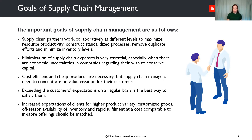The important goals of supply chain management are as follows. Supply chain partners work collaboratively at different levels to maximize resource productivity, construct standardized processes, remove duplicate efforts, and minimize inventory levels. The minimization of supply chain expenses is very essential, especially when there are economic uncertainties and companies wish to conserve capital. Cost-efficient and cheap products are necessary, but supply chain managers need to concentrate on value creation for their customers. Exceeding the customer's expectations on a regular basis is the best way to satisfy them. Increased expectations of clients for higher product variety, customized goods, off-season availability of inventory, and rapid fulfillment at a cost comparable to in-store offerings should be matched.